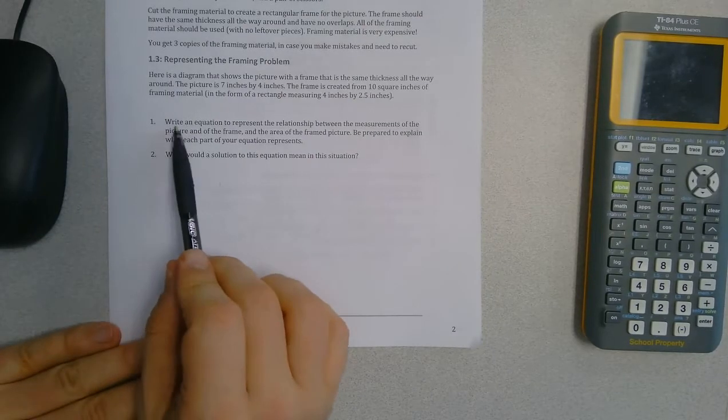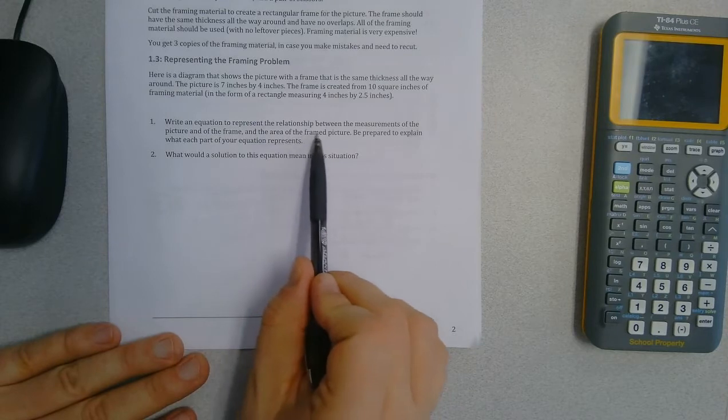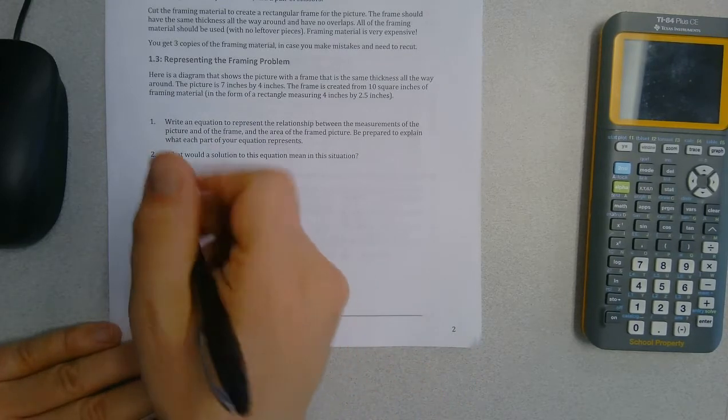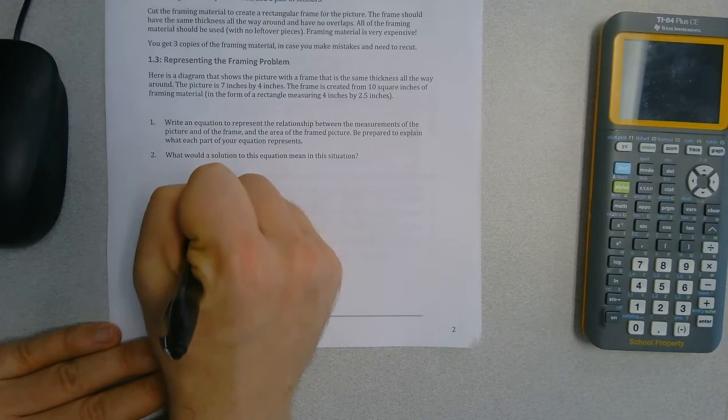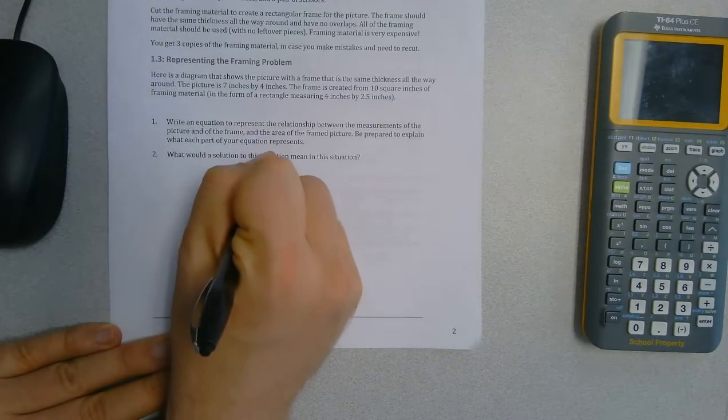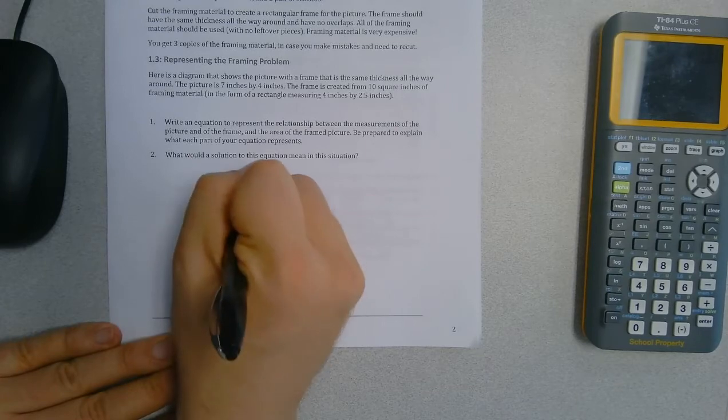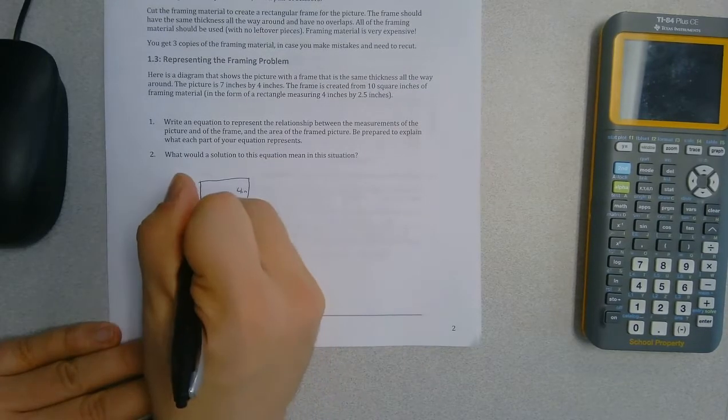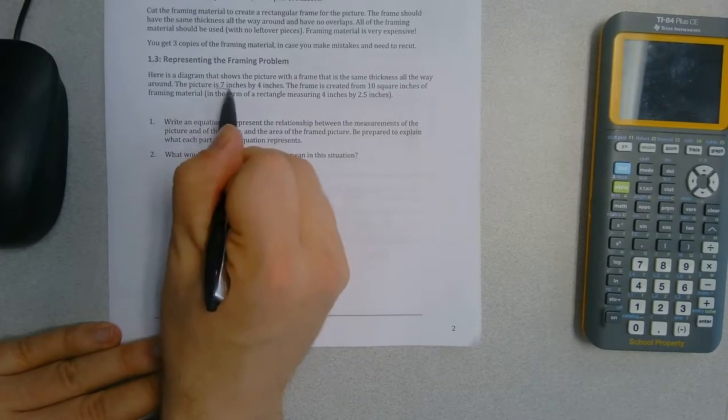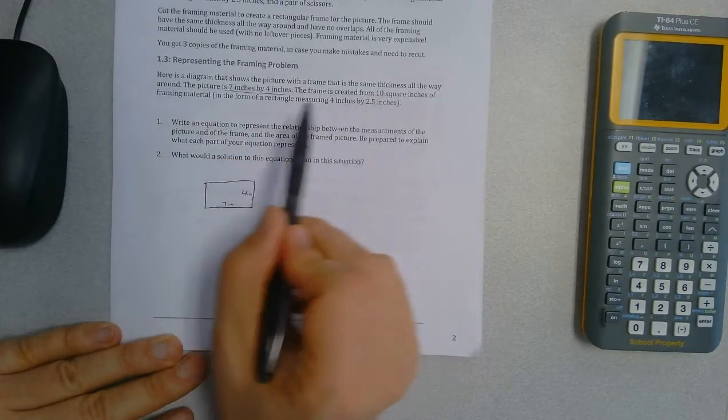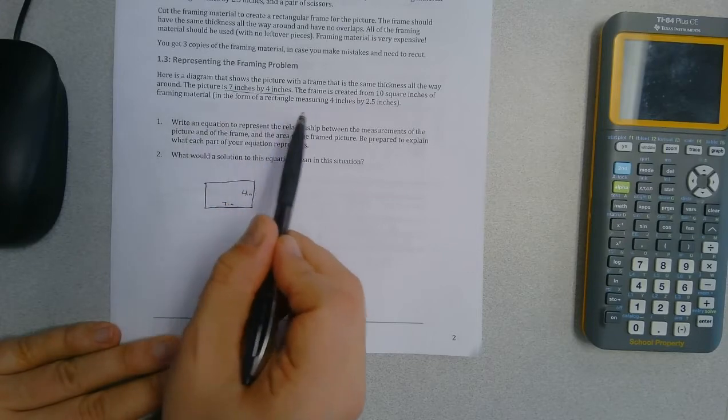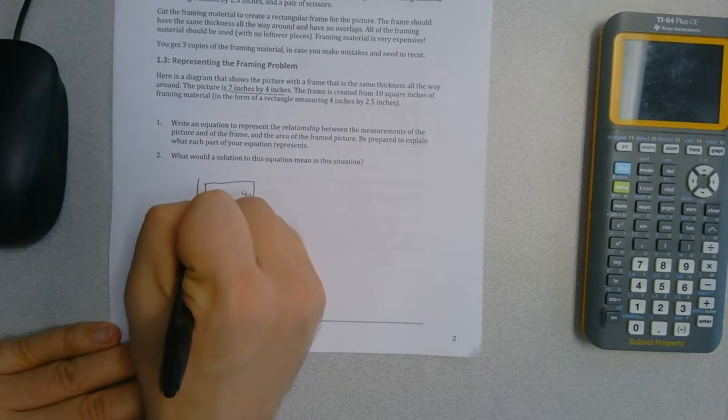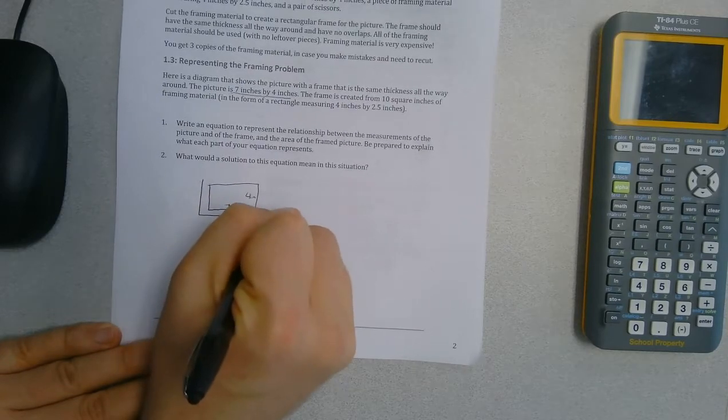So now ladies and gentlemen, we need to write an equation to represent the relationship between the measurements of the picture and the frame. So if I were drawing the picture, it's seven inches by four inches, and then the frame we don't know how long it is or how wide it is.